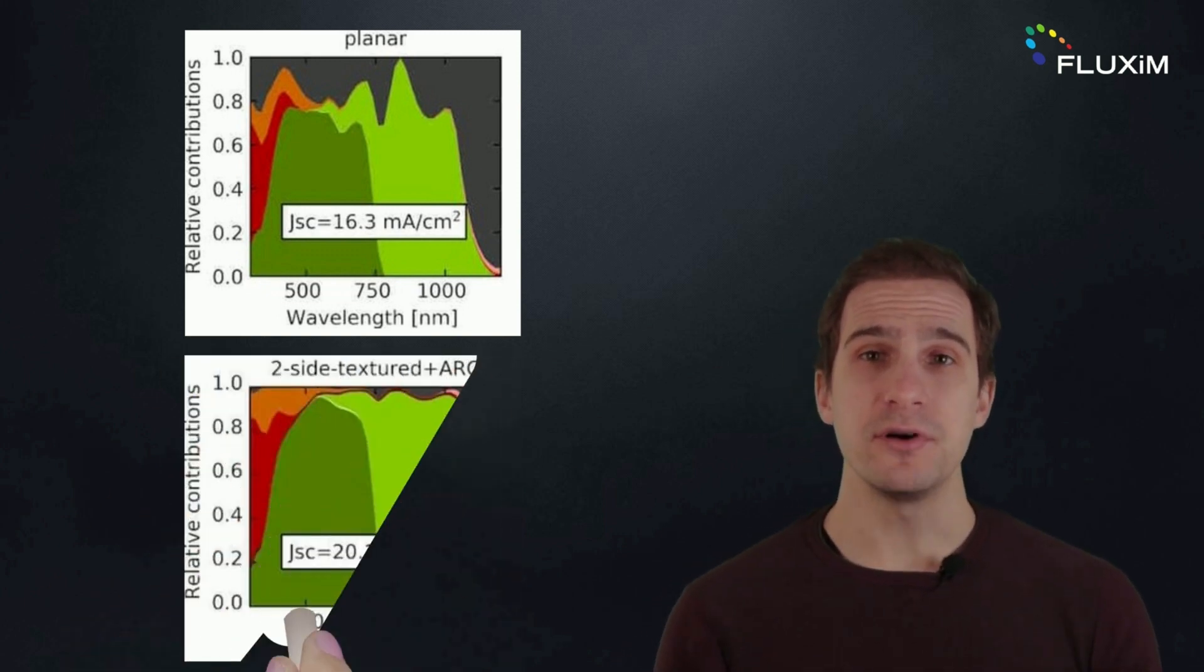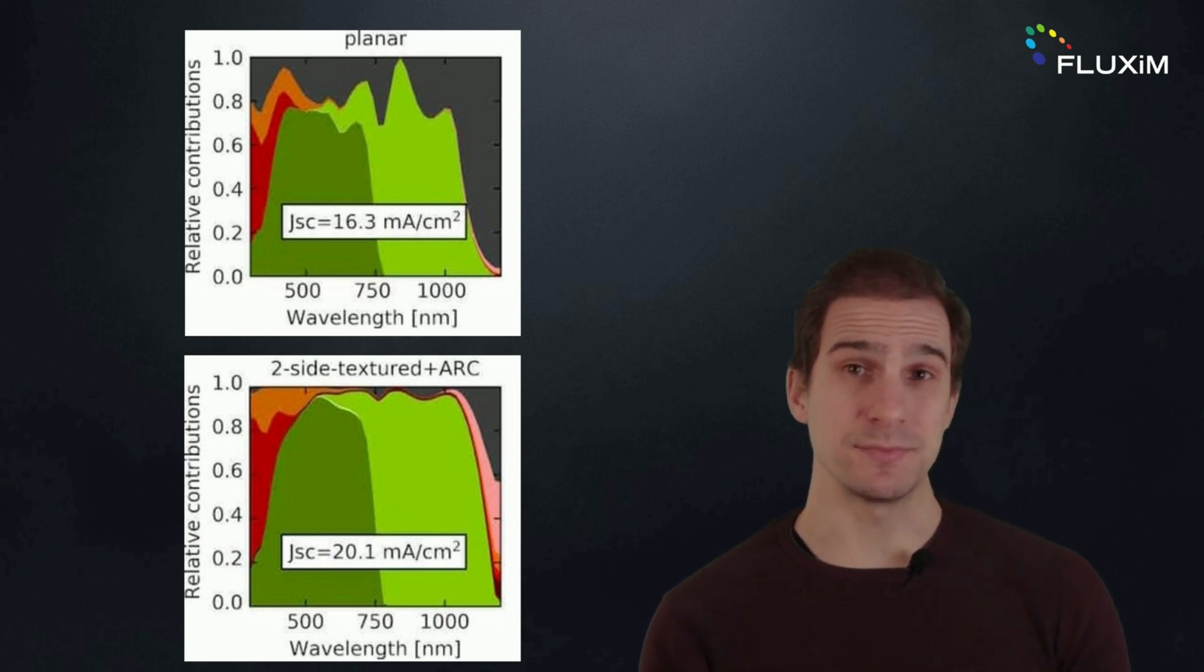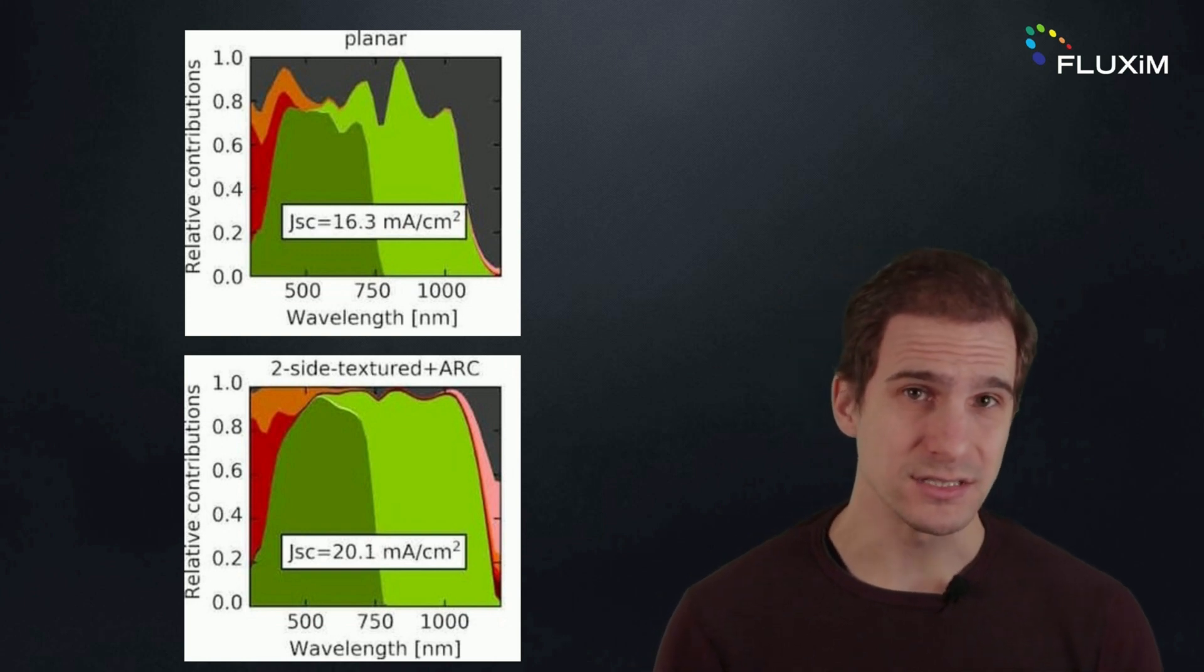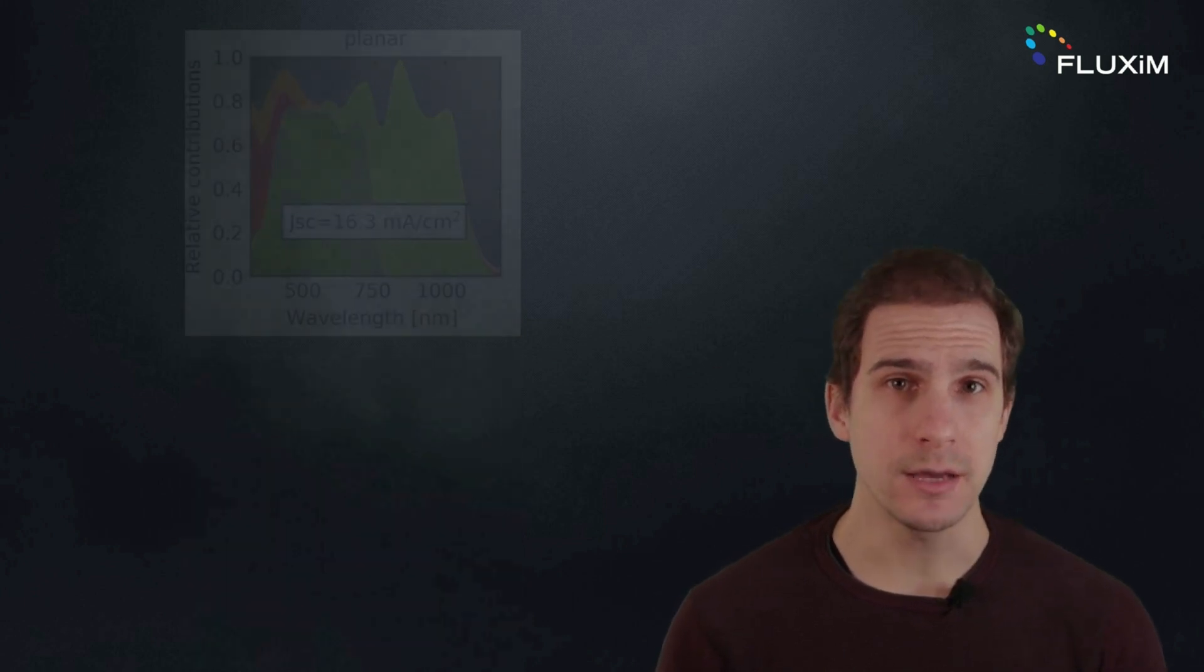The texturing of both sides of silicon subcell brings a clear improvement in the light absorption at wavelengths larger than 750 nanometers. The current increases by almost 23% compared to the planar device. It is silicon that especially benefits from light management strategies, whereas perovskite does not require such treatments thanks to the high absorption coefficient.